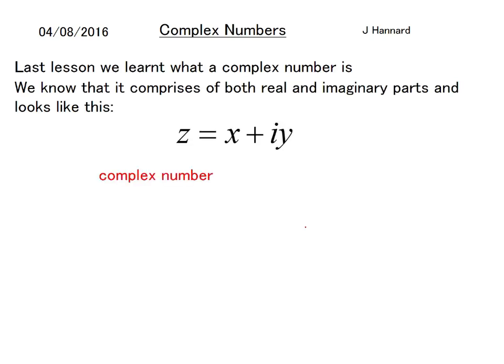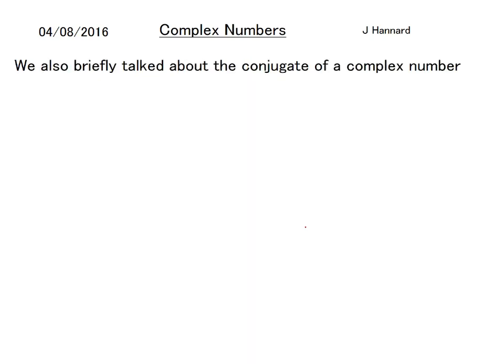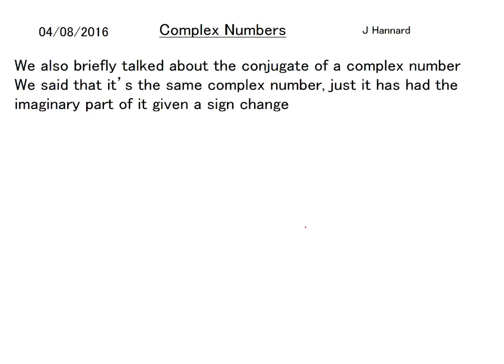We also briefly talked about the conjugate of a complex number. That's the same complex number just with the imaginary part given a sign change. So if w = 3 - 4i, then w* = 3 + 4i.